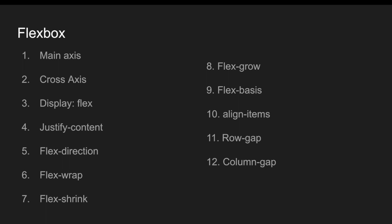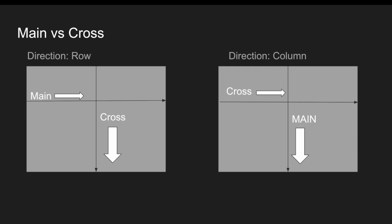Let's understand main axis versus cross axis. When the flexbox direction is row, the main axis is horizontal — from left to right — and the cross axis is from top to bottom, perpendicular to the main axis. When the direction is column, the vertical direction becomes the main axis and horizontal becomes the cross axis. This diagram helps you manage layouts using flexbox.